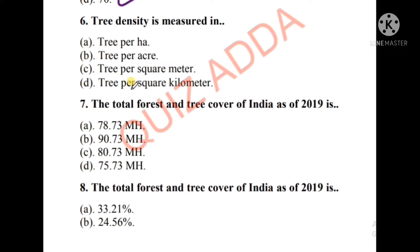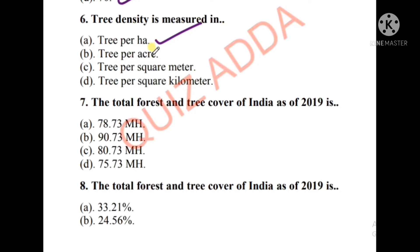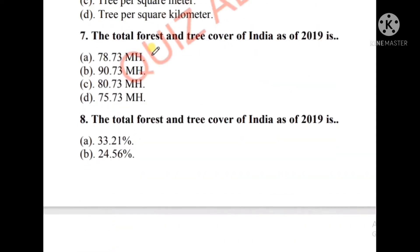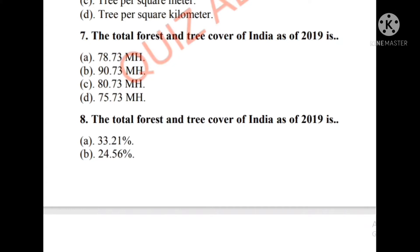Question number six: Tree density is measured in — the options are trees per acre, trees per square meter, or trees per square kilometer. The right answer is option A, that is trees per hectare. So tree density is measured in trees per hectare.